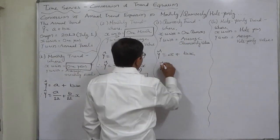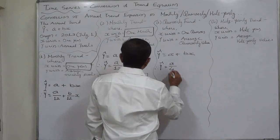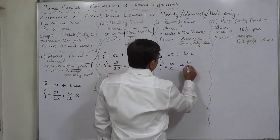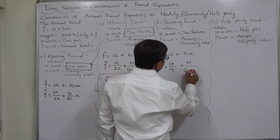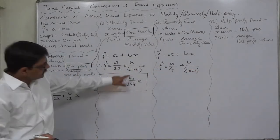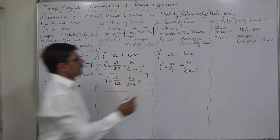So the quarterly trend will be a divided by 4 plus b divided by 4 into 12, yes this logic, into x.